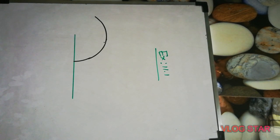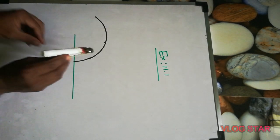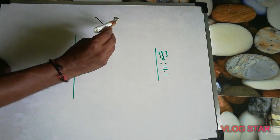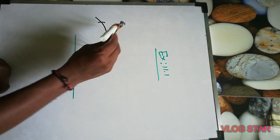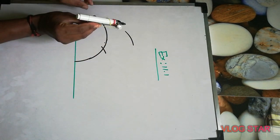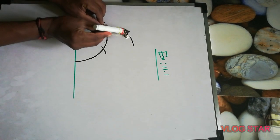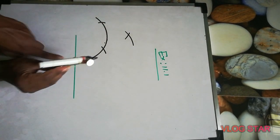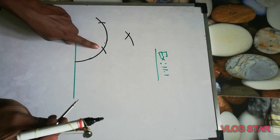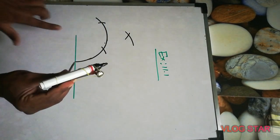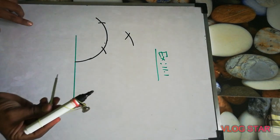Don't change the radius. From the same place we'll cut it again, then from there again we'll cut it upside. From the second point also you will cut it again. From here and here we'll cut again, then from this point we'll cut again. When we join that point, that is 90 degrees.